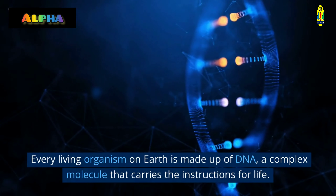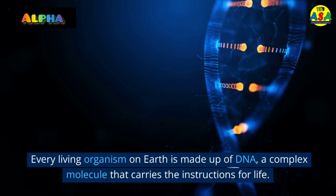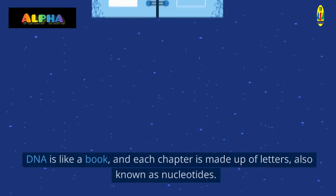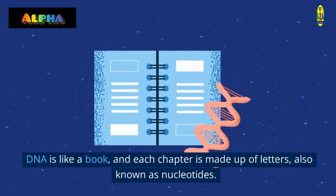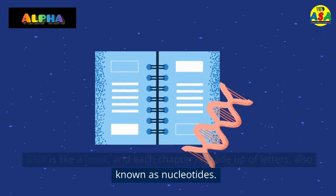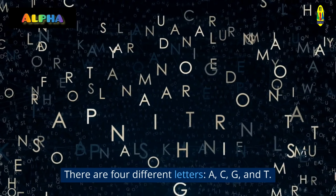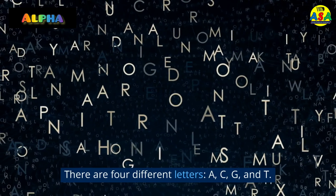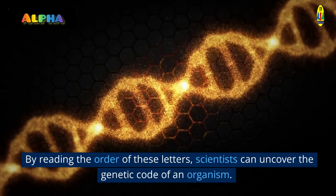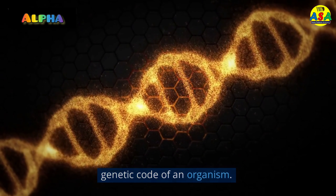Every living organism on Earth is made up of DNA, a complex molecule that carries the instructions for life. DNA is like a book, and each chapter is made up of letters, also known as nucleotides. There are four different letters: A, C, G, and T. By reading the order of these letters, scientists can uncover the genetic code of an organism.